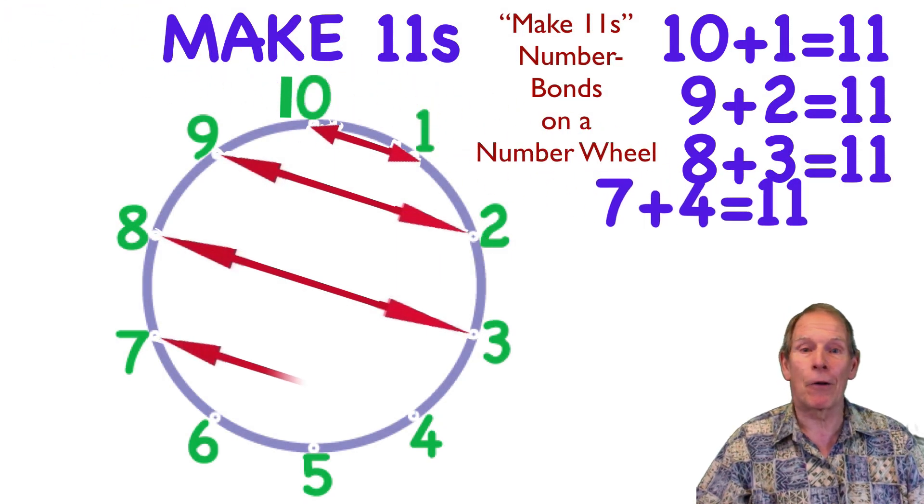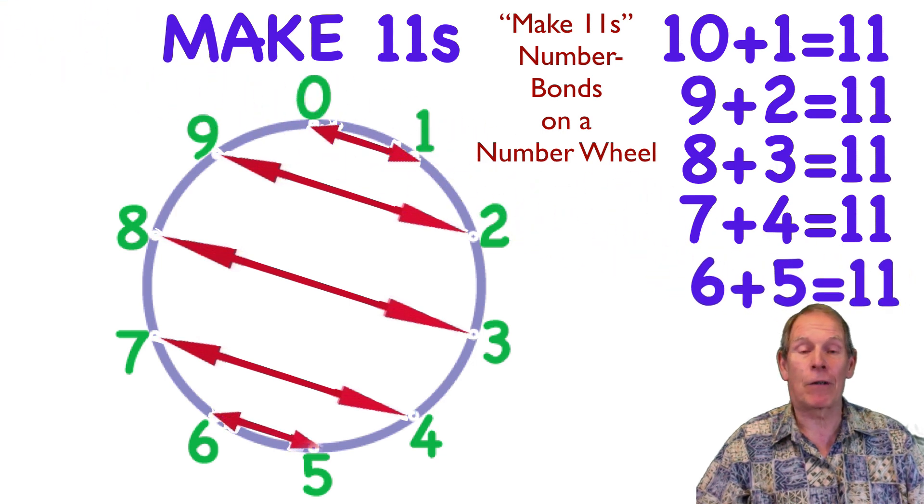So, let's continue on down. 7 plus 4 is 11, and 6 plus 5 is 11.